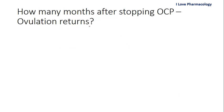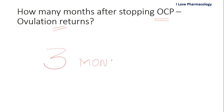There is one more important point: how long does it take to regain normal ovulation once you stop the oral contraceptive pills? It takes around three months to regain normal ovulation after stopping COC pills.